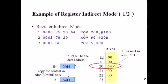Example: MOV 20H, #100 moves immediate value 100 (hex 64) into address 20H. Then MOV R0, #20H stores 20H as a data value inside R0. MOV A, @R0 means the value at the address held by R0 — which is 20H — is copied into A. Since 20H holds 64, the value 64 is copied into the accumulator. The @ symbol represents 'value at the address.'